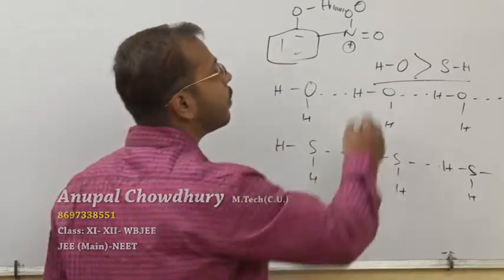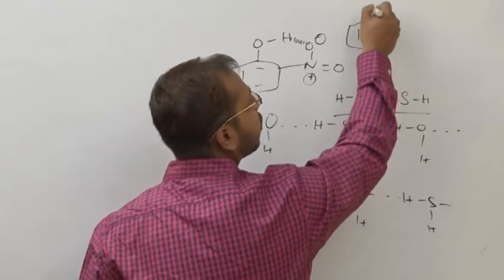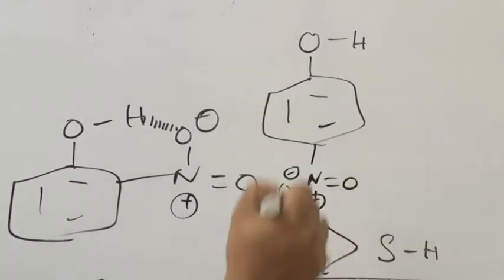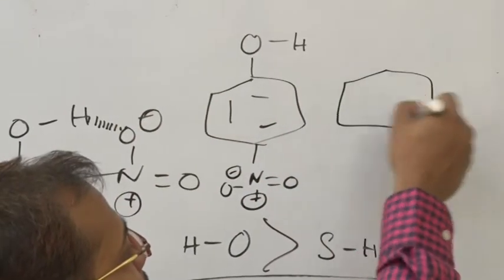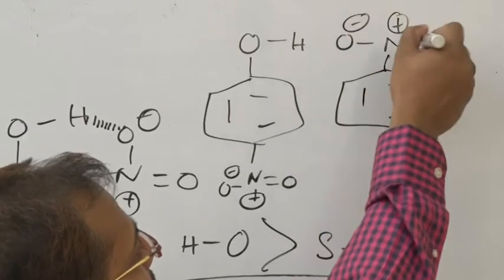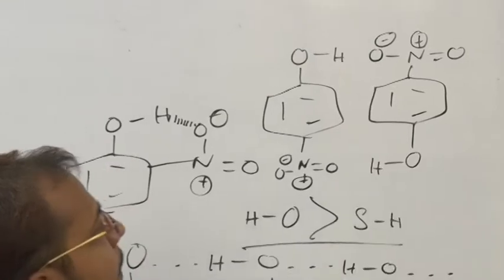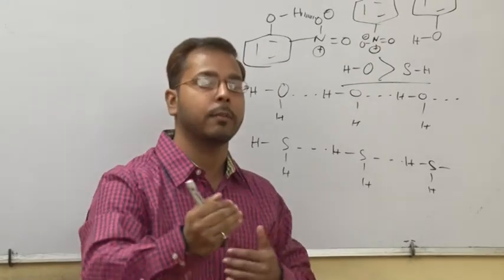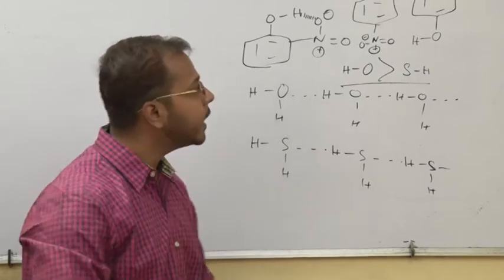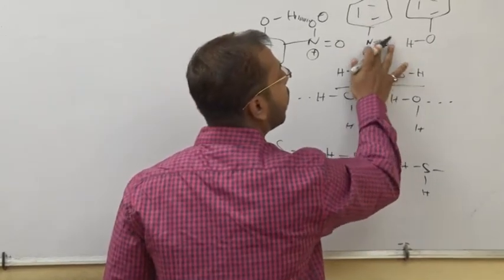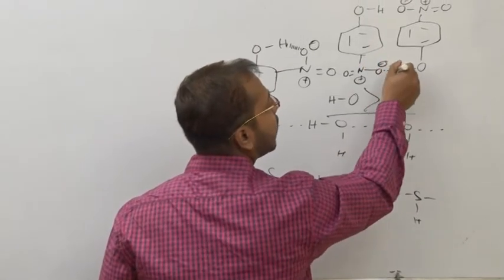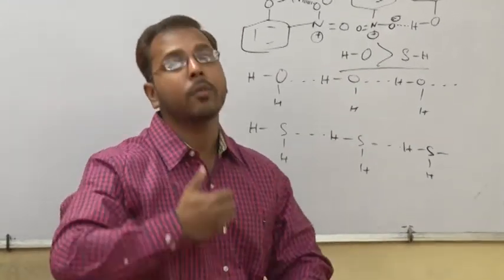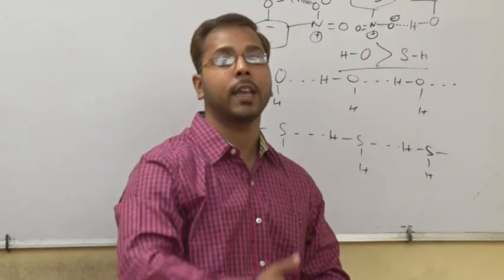The next question is: between ortho-nitrophenol and para-nitrophenol, which one will have a higher boiling point? In the para position the –OH and –NO₂ groups are far apart, so intramolecular hydrogen bonding cannot form. In ortho-nitrophenol, the bonding takes place within the molecule, but ortho-nitrophenol can also form intermolecular hydrogen bonds with another ortho-nitrophenol molecule.